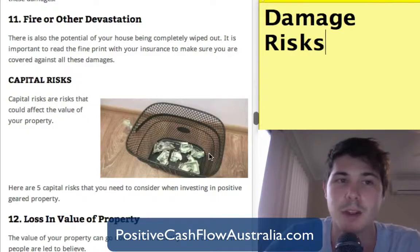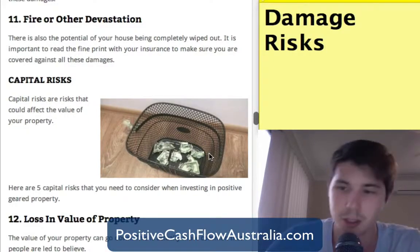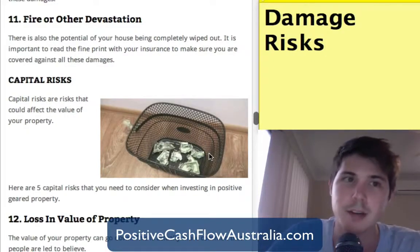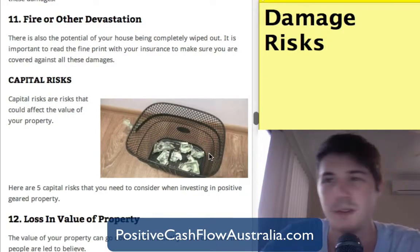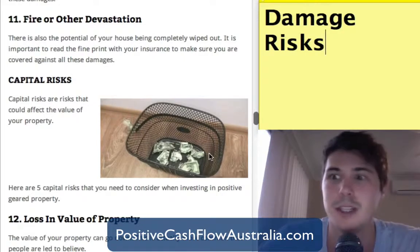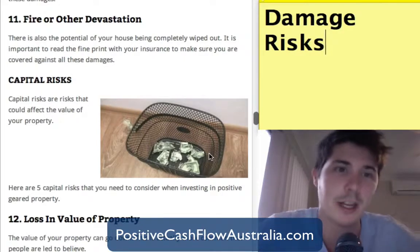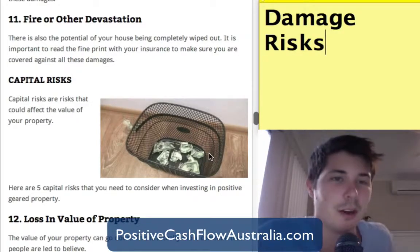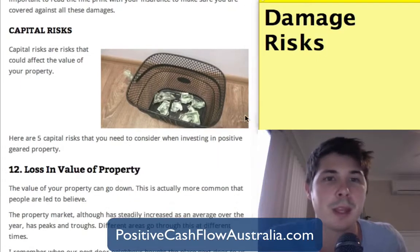Number eleven is fire and other devastation — more serious risks like bushfires, floods, sinkholes, mudslides, and all those sorts of things. These are the more severe damage risks to consider when investing in property.